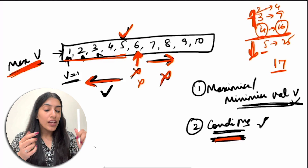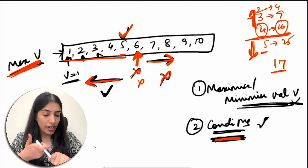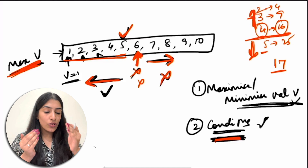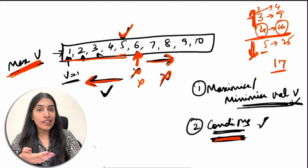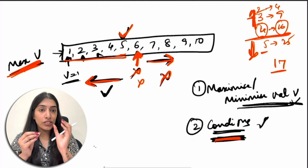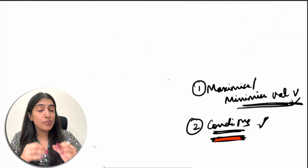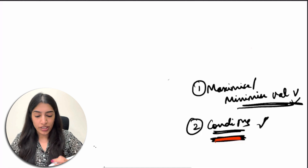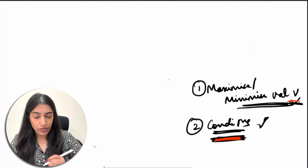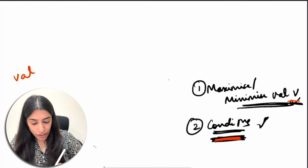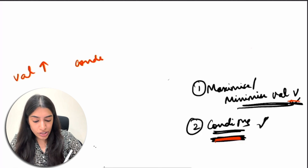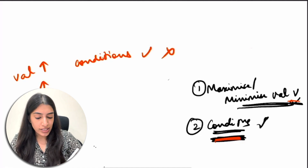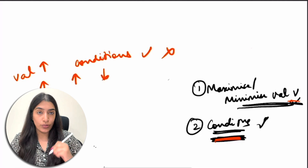To revise: we first see that we have to maximize or minimize a value, then we are given some conditions, then we see that as we increase or decrease V, the condition will always be fulfilled or never be fulfilled. This will be the trickiest part in all the questions — identifying that as V increases, conditions will always be either true or never true.